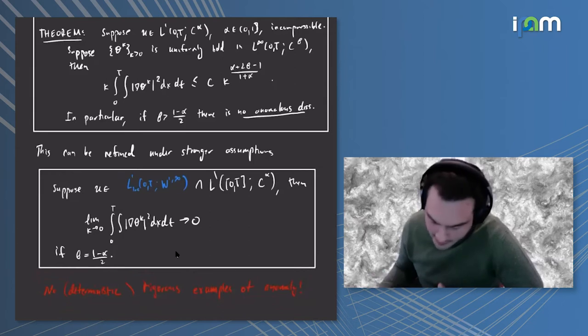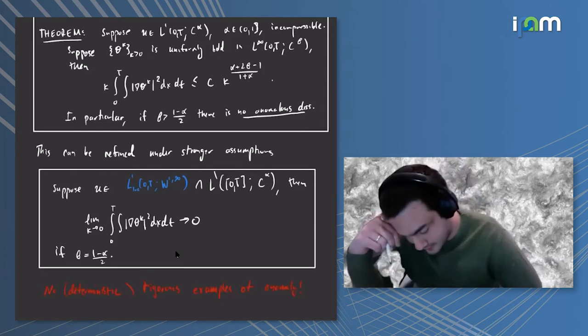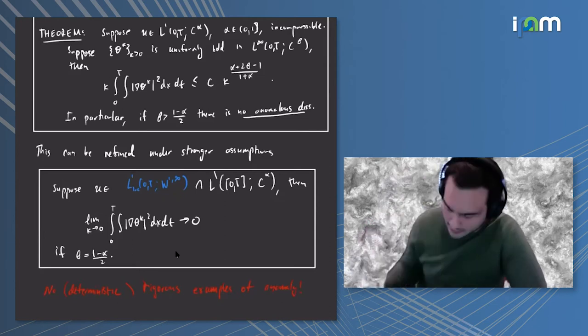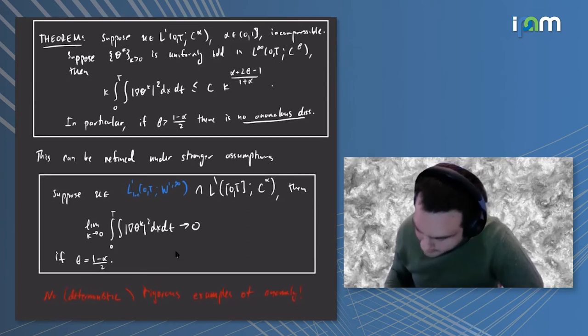There were no deterministic examples that exhibit the behavior of anomalous dissipation for scalars. There was work on a random model called the Kraichnan model which is related but nothing deterministic.